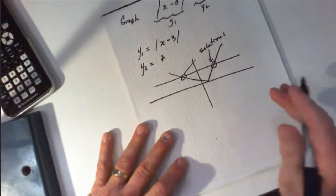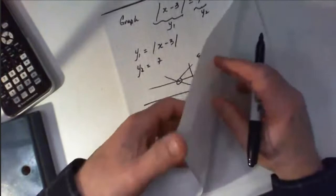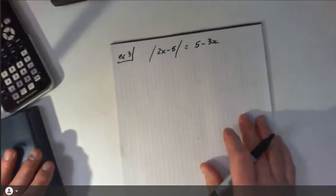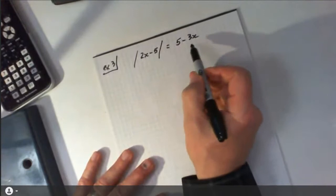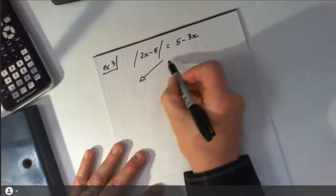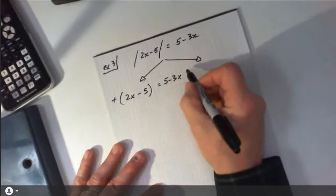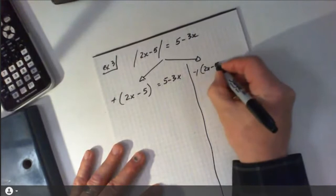But most of the equations in this unit are done algebraically, so I'll show you another couple of examples. In this next example, we're taking a look at the absolute value of 2x minus 5 equals 5 minus 3x. Again, we will look at it from both sides — the positive side and the negative side.